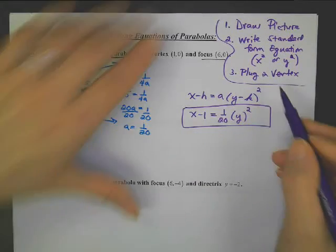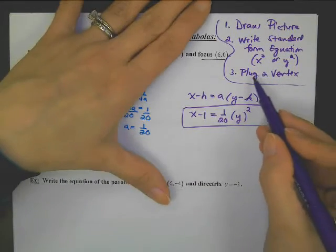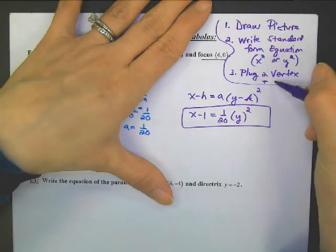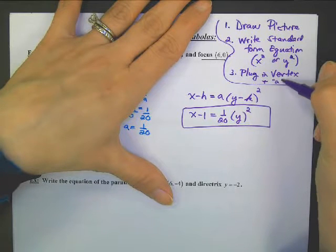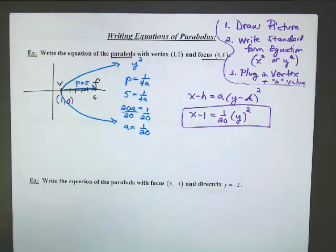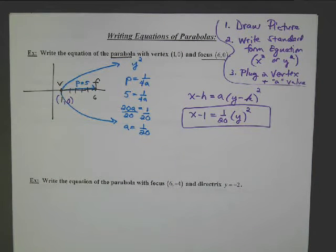I'm going to change this hint to 'plug in vertex and a value,' because you need the a value as well as the vertex to finish off the problem completely.